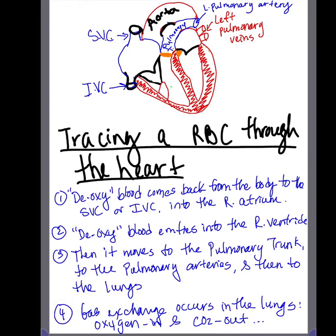Now let's trace a red blood cell through the heart. We begin on the right side. Deoxygenated blood comes from the body through either the superior vena cava or the inferior vena cava into the right atrium — that's your first step. Second, from the right atrium it moves to the right ventricle. Then it empties into the pulmonary trunk and into the pulmonary arteries toward the lungs.